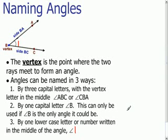And the last way to name an angle is by one lowercase letter or number written in the middle of the angle. So here we can see in red the number 1 is written inside the angle, so we can refer to this angle as angle 1.